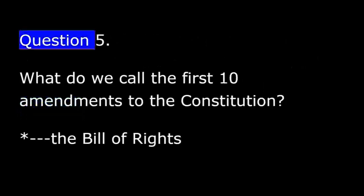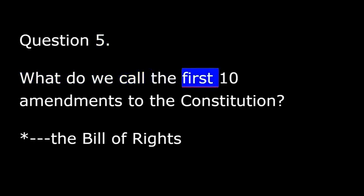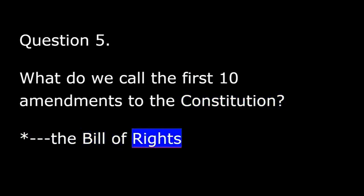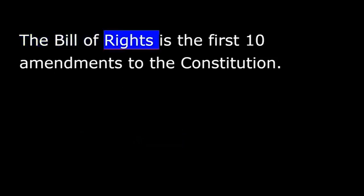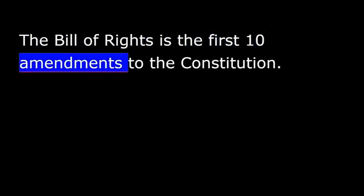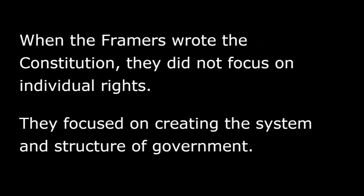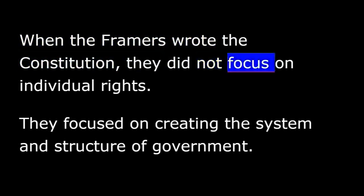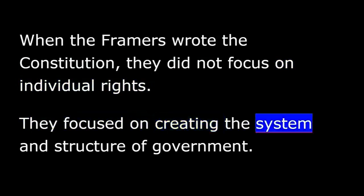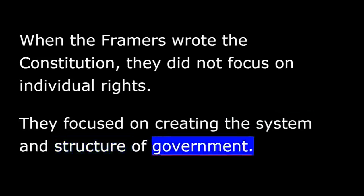Question 5. What do we call the first ten amendments to the Constitution? The Bill of Rights. The Bill of Rights is the first ten amendments to the Constitution. When the framers wrote the Constitution, they did not focus on individual rights. They focused on creating the system and structure of government.